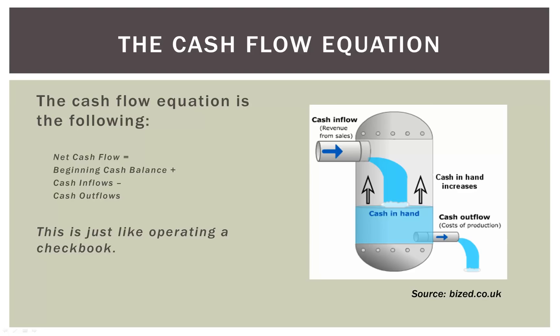This is basically just like operating your checkbook. You have a balance at the end of every month that you reconcile, and over the course of the month you have cash inflows like your paycheck or salary, and cash outflows like paying your bills, rent, or mortgage. Hopefully at the end of the month you have taken in more cash than you have paid out. That's all cash flow really is — it's not anything more complicated than that.